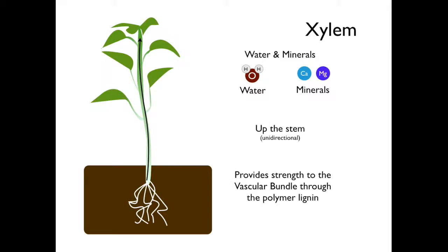Xylem transports water and minerals from the roots up the stem. Because xylem sap only moves in one direction, it is called unidirectional. Xylem tissue also provides strength to the vascular bundle because it contains the polymer lignin.